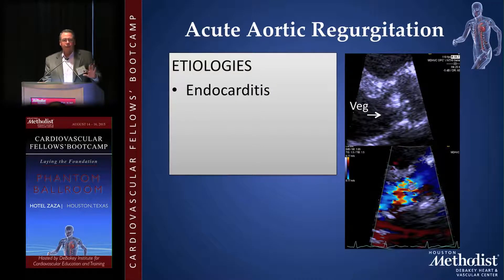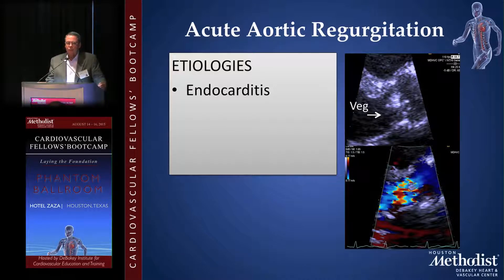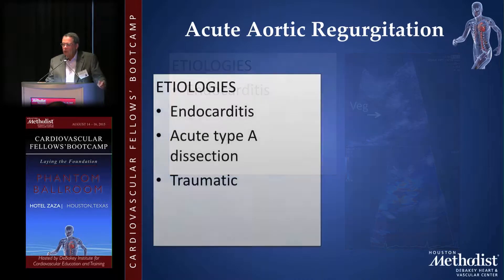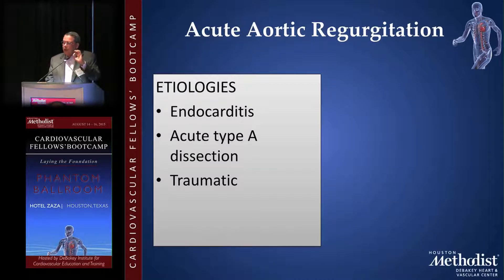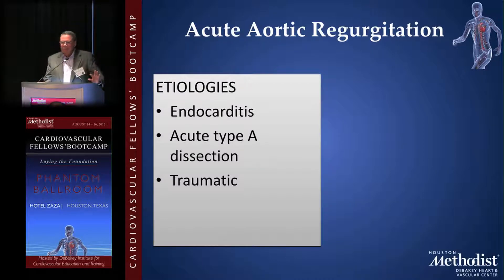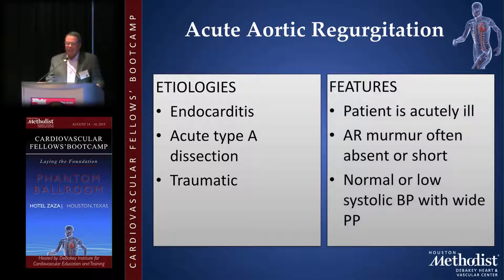First of all, acute AI is very easy. Decisions to manage acute AI are very similar to symptomatic AS: fix them or let them die, because people with acute AI don't have a nice day. Number one cause is endocarditis. Number two cause is type 1 dissection, and very rarely it's a knife in the chest. These people are not happy — they're usually pretty symptomatic and acutely ill.